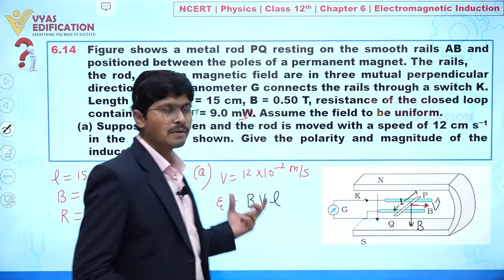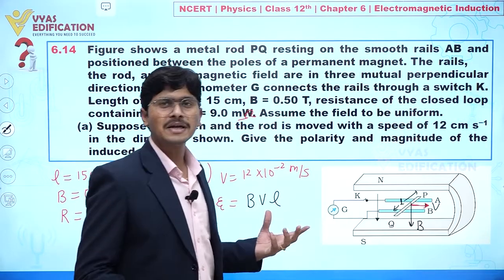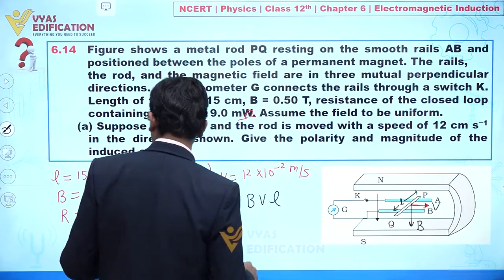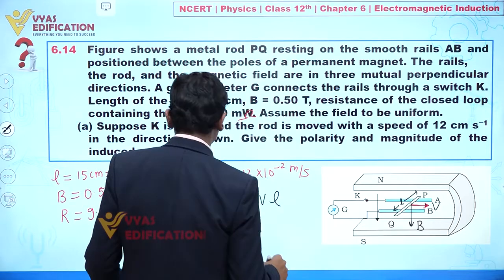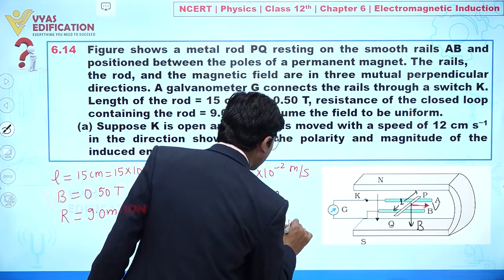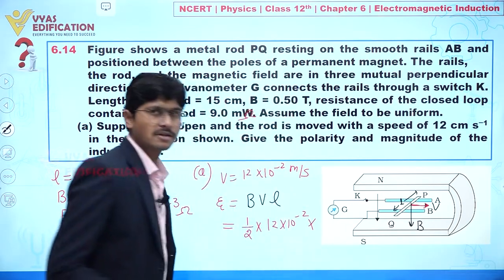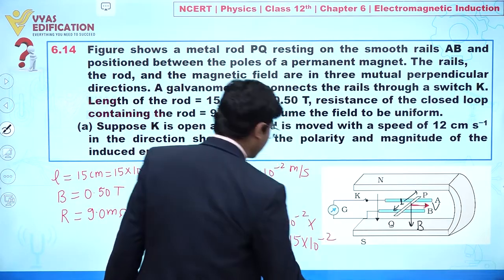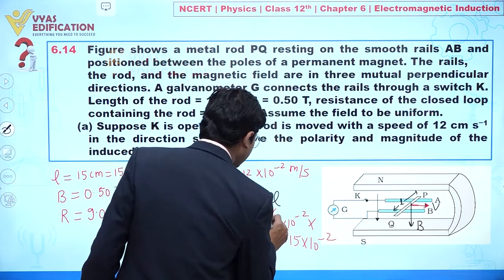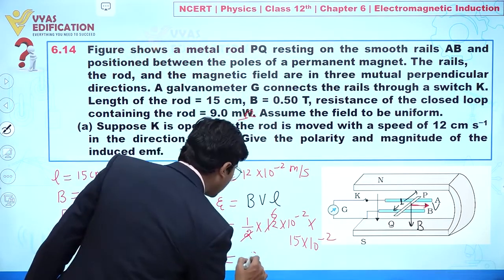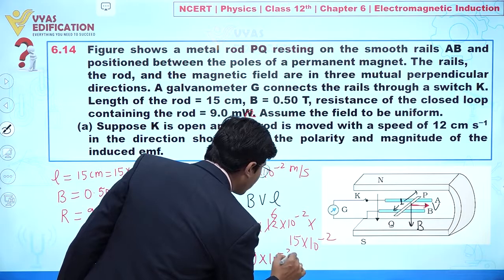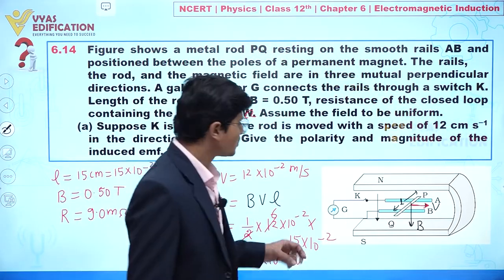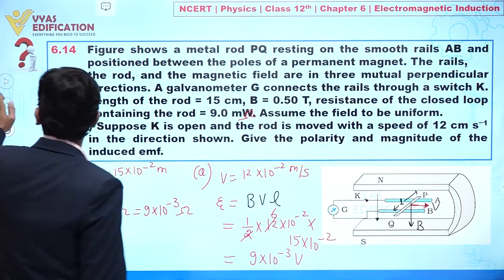Since B, V, and L are all perpendicular to each other, we can directly apply: EMF = BVL. Substituting: B = 0.50, V = 12×10⁻² m/s, L = 15×10⁻² m. This gives EMF = 0.50 × 12×10⁻² × 15×10⁻² = 9×10⁻³ volt. So the induced EMF in rod PQ is 9 millivolts.